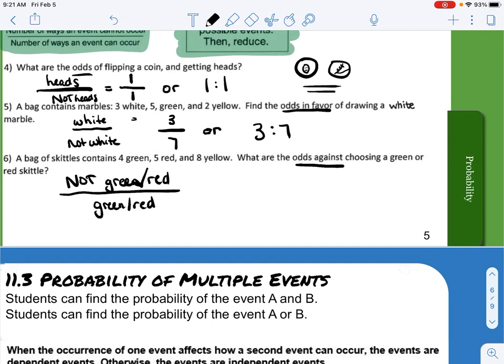So the not green or red is just the yellow choice. That is eight over the green and red, which is nine. So the odds against choosing a green or red Skittle is eight to nine, or you can write it 8:9.